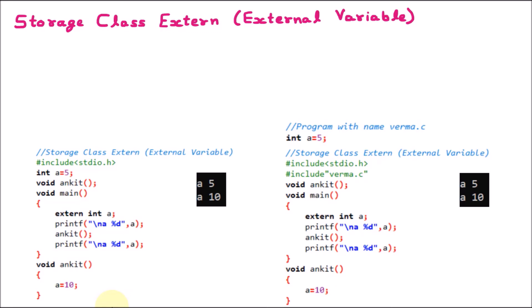We know that in our program there are global variables. Global variables are accessible everywhere. So those global variables are also called the external variable. We can say that storage class extern or the external variables are the global variables.